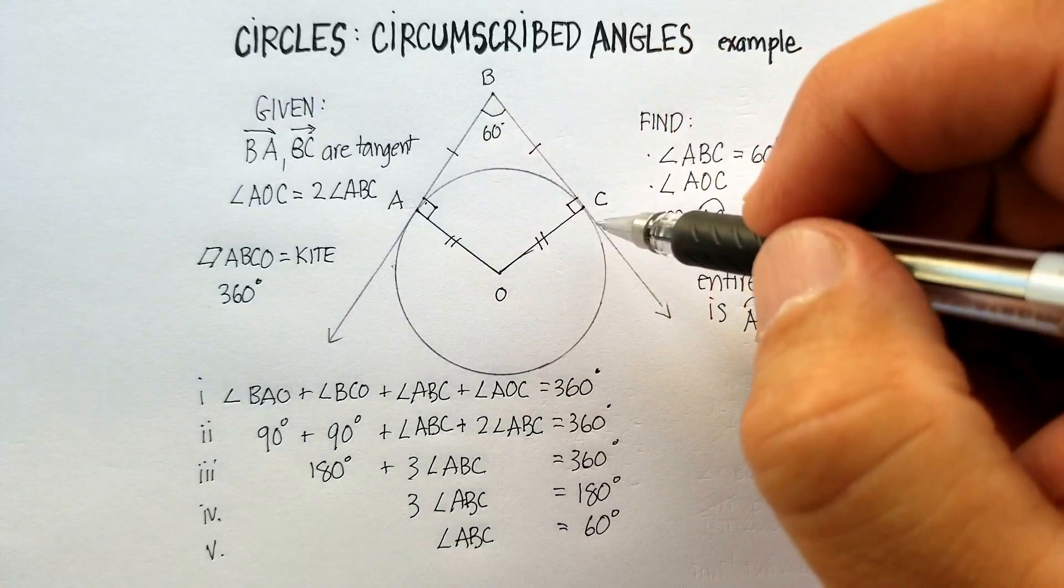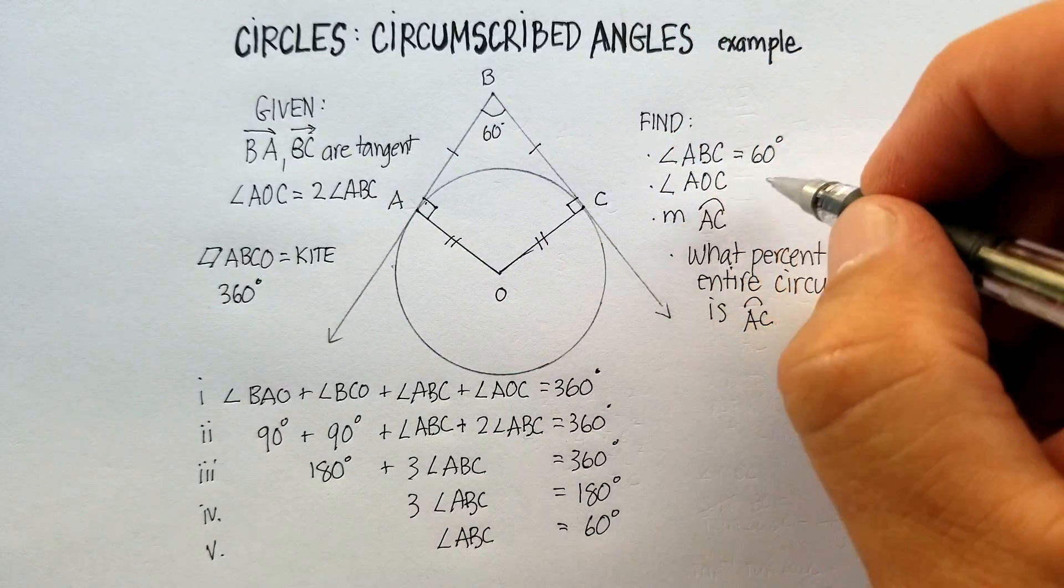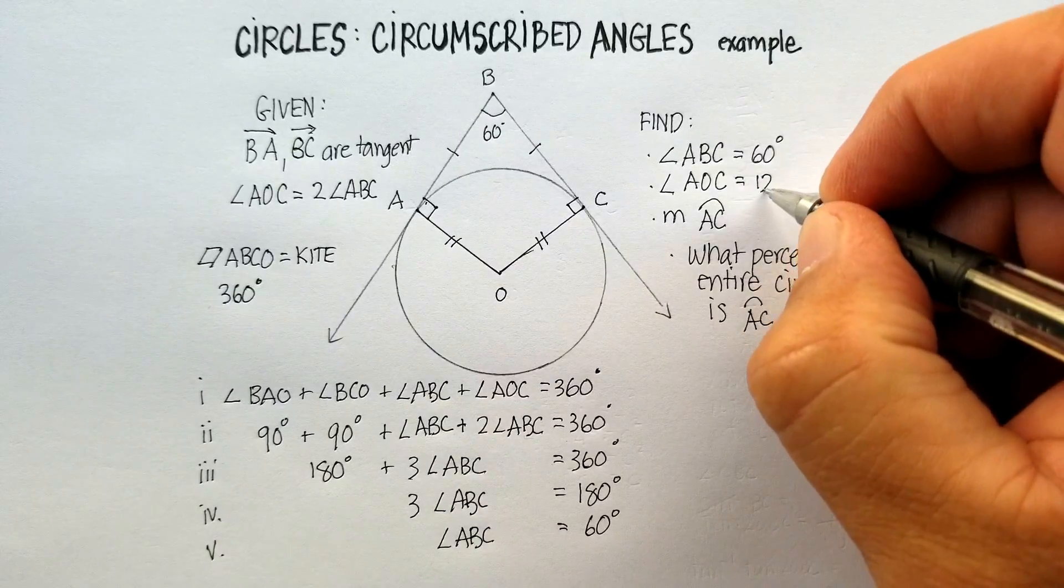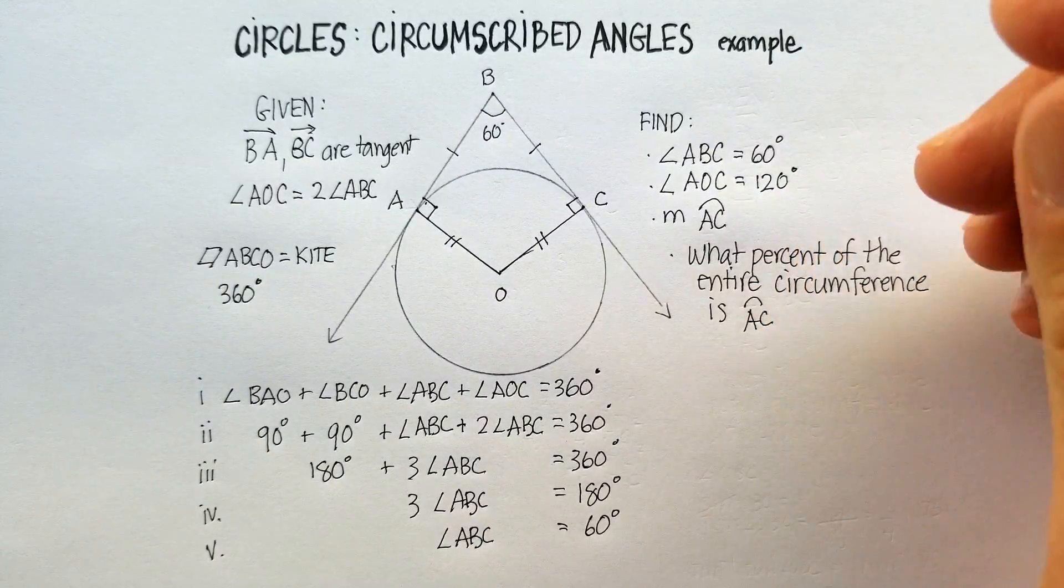If angle ABC is 60, angle AOC is two times that, which makes it 120 degrees. Now, why is that important?